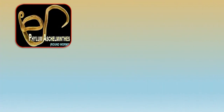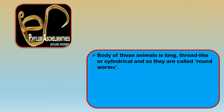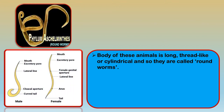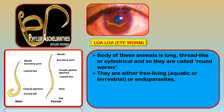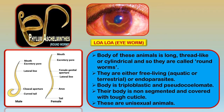The next phylum is Aschelminthes, or roundworms. The body is long, thread-like, or cylindrical — hence they are called roundworms. Ascaris is a typical example, with a male having a curved tail. They are either free-living in water or on land, or endoparasitic, living within the host. The body is triploblastic and pseudocoelomate, meaning they don't have a true body cavity.